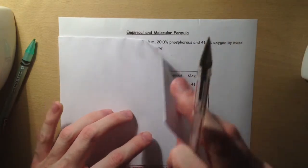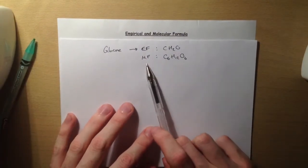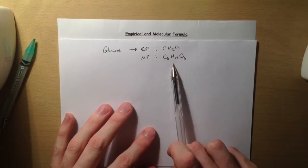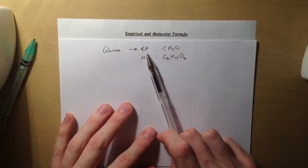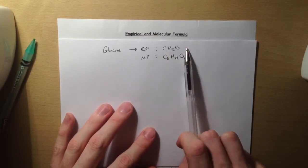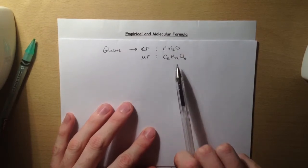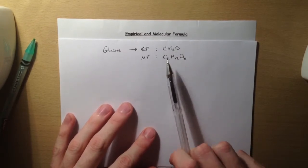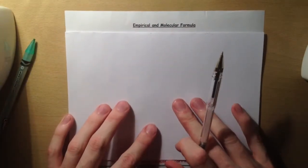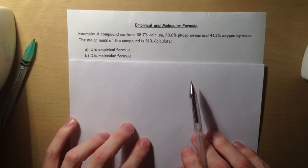For example, glucose has a molecular formula of C6H12O6, but it's got an empirical formula of CH2O. It's the simplest whole number ratio of these atoms that we can get. When we are working out empirical formula, there's a very stringent set of steps that we're going to look at.